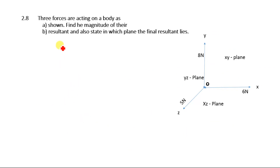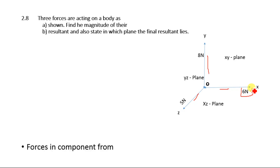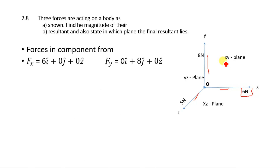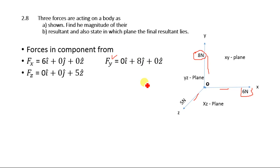Numerical 2.8: Three forces are acting on a body as shown. Find the magnitude of their resultant and also state in which plane the final resultant lies. This is the x-axis, this is the y-axis, and this is the z-axis. The force along the x-axis is Fx = 6 N. The force along the y-axis is Fy = 8 N, acting only in the y-direction. And Fz = 5 N, acting along the z-axis.